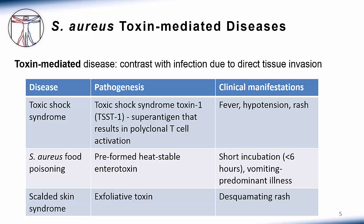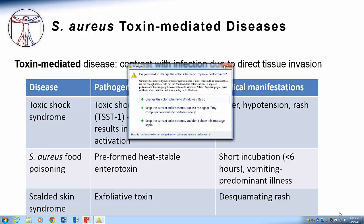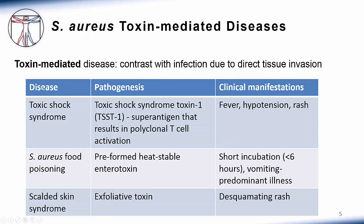The most serious of these is toxic shock syndrome, in which a toxin called toxic shock syndrome toxin 1 acts as a superantigen that results in polyclonal T cell activation. This leads to a syndrome with fever, hypotension, and rash, which may be fatal. This was initially associated with super absorbent tampons, and that may appear as a board question for you, although that association is less common in the present day.